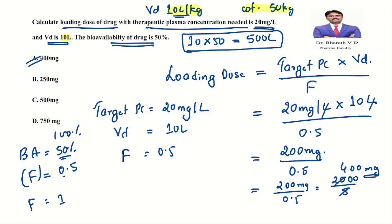I know you all left maths and took medicine, but don't worry! Again: target = 20, Vd = 10, so 20 × 10 = 200, divided by 0.5. To remove 0.5, multiply by 10: 2000 / 5 = 400 milligrams. The loading dose of the drug is 400 mg.